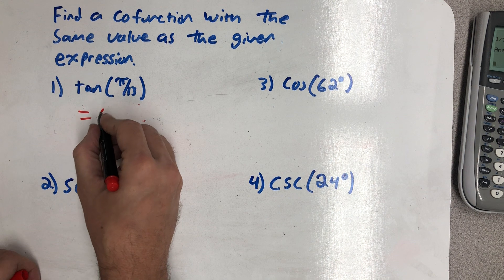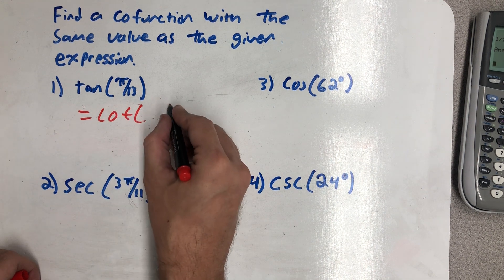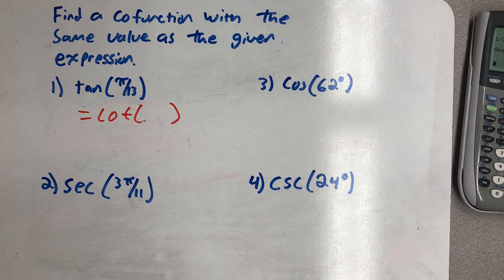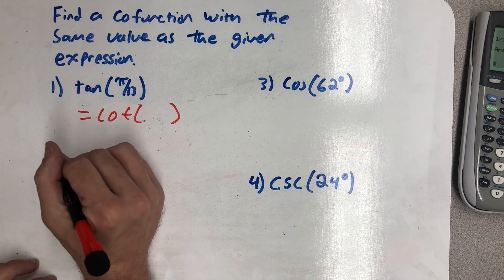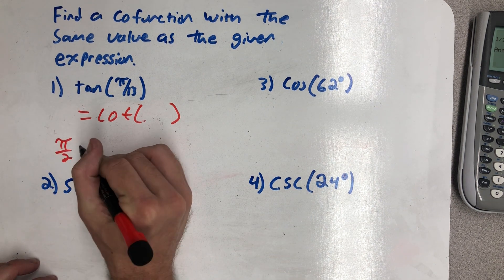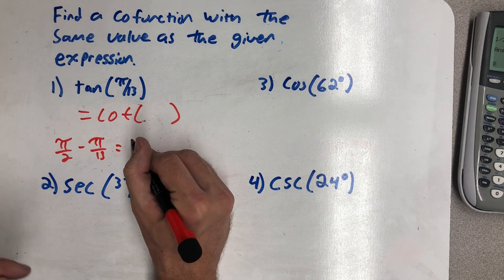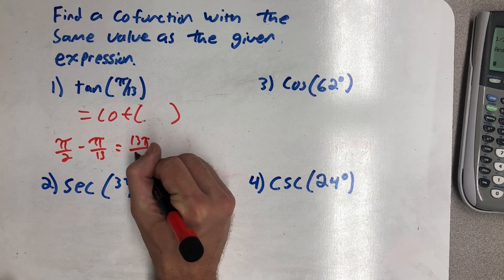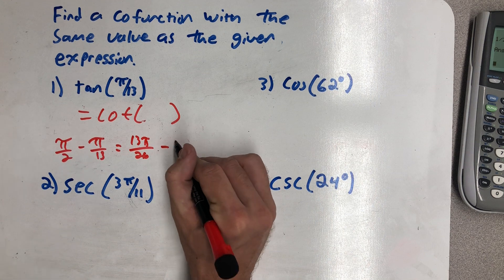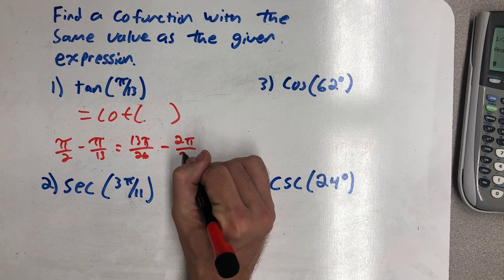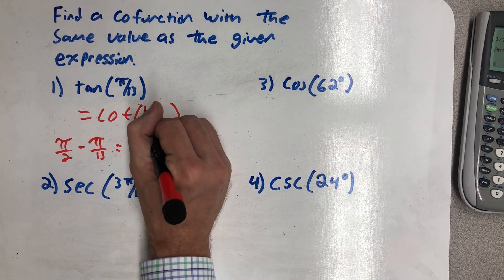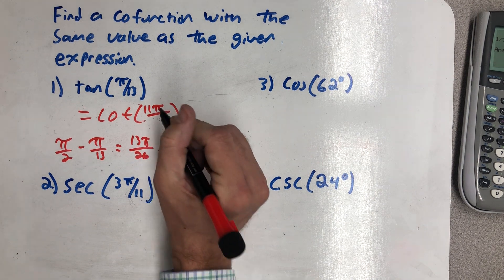So for tangent, I'll be changing that to cotangent. Now I need to find a complementary angle to π/13. So I need to know what π/2 minus π/13 is. We need a common denominator. So that would be 13π/26 minus 2π/26. So my complementary angle is 11π/26.